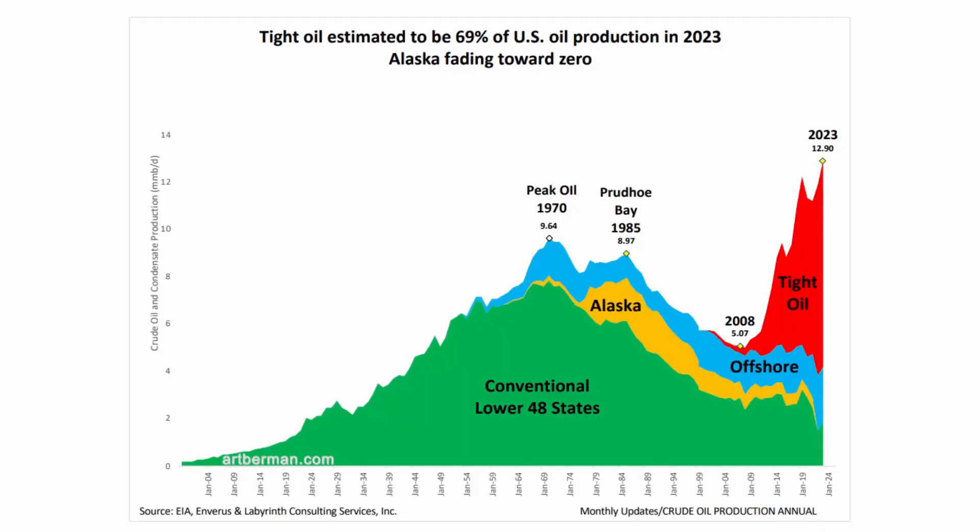The U.S. production profile looks somewhat similar to the world in that our conventional supply declined a lot — from about 1970 until the early 2000s. The U.S. used to produce maybe 10 million barrels a day in the early 1970s, and by 2005-2006 we were down to maybe 4 million barrels a day. That's huge, and the way that was compensated for was the U.S. became the world's largest importer, spending a lot of money bringing other people's oil into the United States.